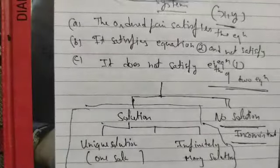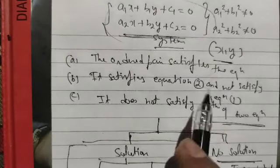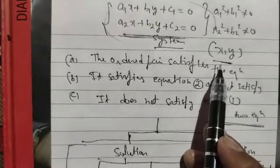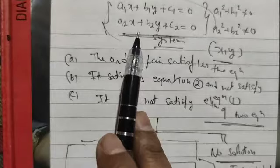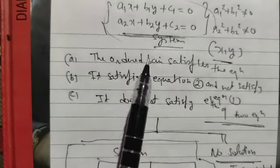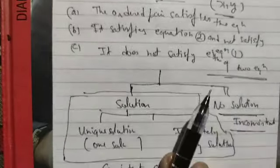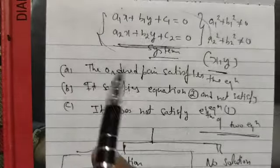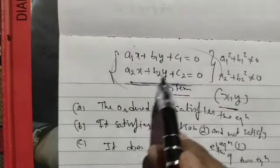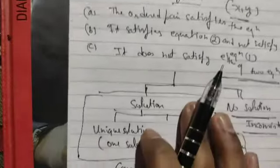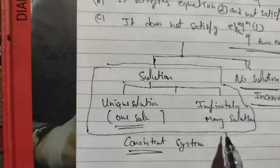When there is no solution, the system is known as an inconsistent system. Till now we discussed about the solution of linear equations in two variables. We have seen that any pair of x and y values will either satisfy the given equations or not satisfy them. It may satisfy only one equation and not the other. We conclude that the system either has a solution — unique or infinitely many — or has no solution.